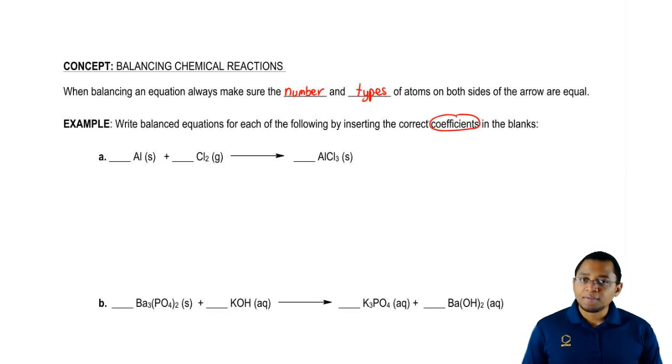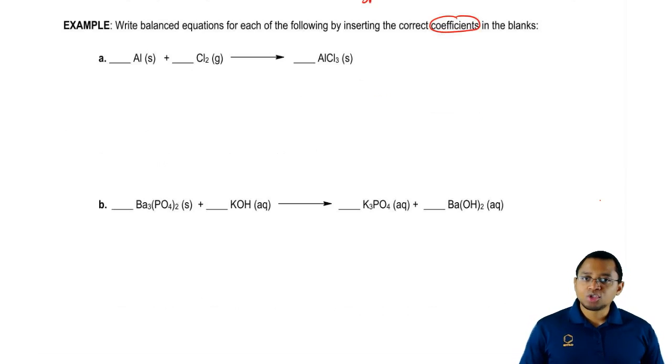Coefficient is just the number that goes in front of each one of these compounds in a balanced equation. The approach we should always take is, let's just write a list. Both sides of the equation have the same elements and for them to be balanced, they have to have the same exact numbers of each of these types of elements.